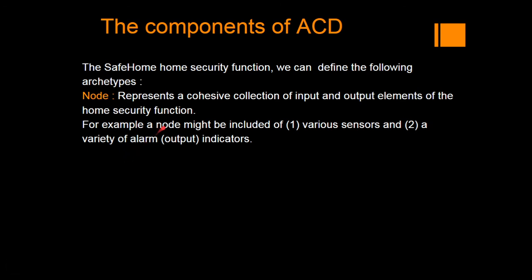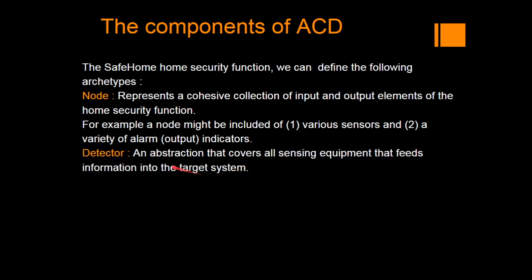For example, a node might include sensors and indicators. The sensors observe the image through the camera, and the indicators are the alarms which give output to the system — they are called nodes, a collection of input and output elements. A detector is an abstraction that covers all the sensing equipment that feeds information into the target system — some information is sensed and given as a message or signal to the target system.